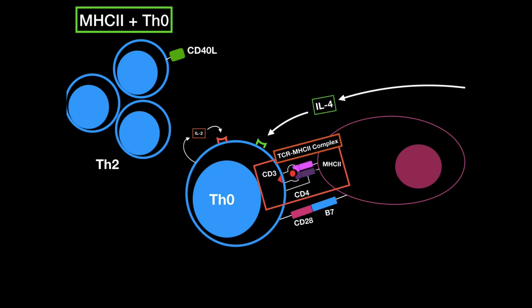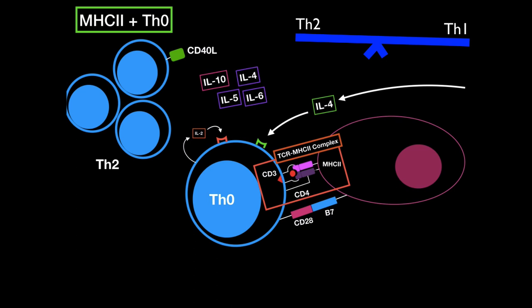The effector TH2 cells now express CD40 ligand to activate B cells, as well as secreting cytokines like interleukin-10. Interleukin-10 suppresses the differentiation of TH1. TH1 and TH2 suppress each other — if one of them is made, it's going to suppress the other, kind of like an on-off switch. The other cytokines will help the B cell differentiate. Our goal is to get humoral defense against this antigen, so we need to differentiate the B cells.